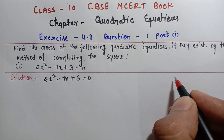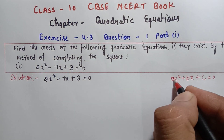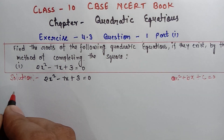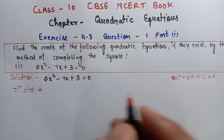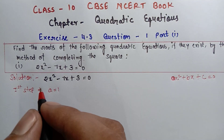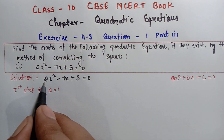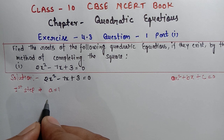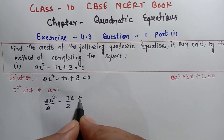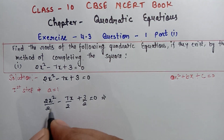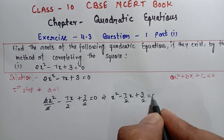आपकी quadratic equation की general form है: ax square plus bx plus c equals to 0। First step में आपको x square का coefficient one करना है। यहाँ इस equation को 2 से divide करते हैं: 2x square divided by 2 minus 7x divided by 2 plus 3 by 2 equals to 0। Two से two cancel out होकर x square minus 7 by 2x plus 3 by 2 equals to 0 आ जाता है।